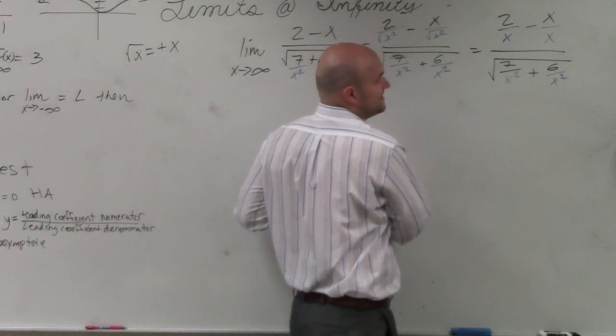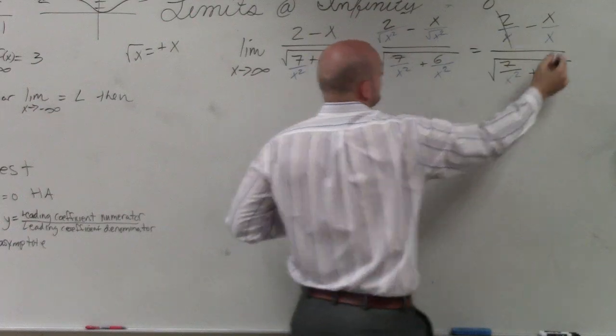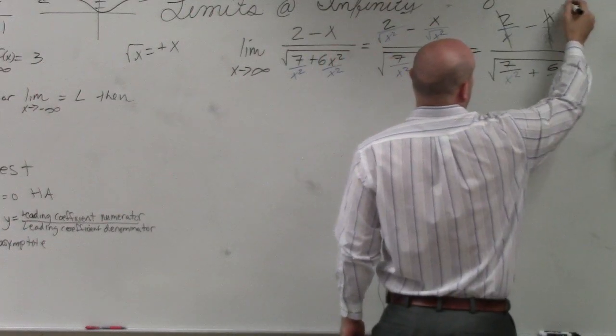2 over any kind of number as it keeps getting larger and larger is obviously going to be going to 0. That's going to go to 1.